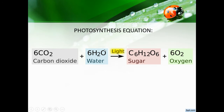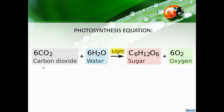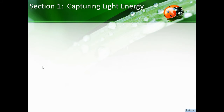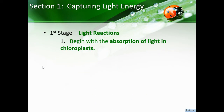This is the equation for photosynthesis — you'll get used to seeing it written out in words or using chemical symbols. Six CO₂ plus six H₂O with light energy yields C₆H₁₂O₆ and six O₂. In words: carbon dioxide plus water with light gives us sugar and oxygen.